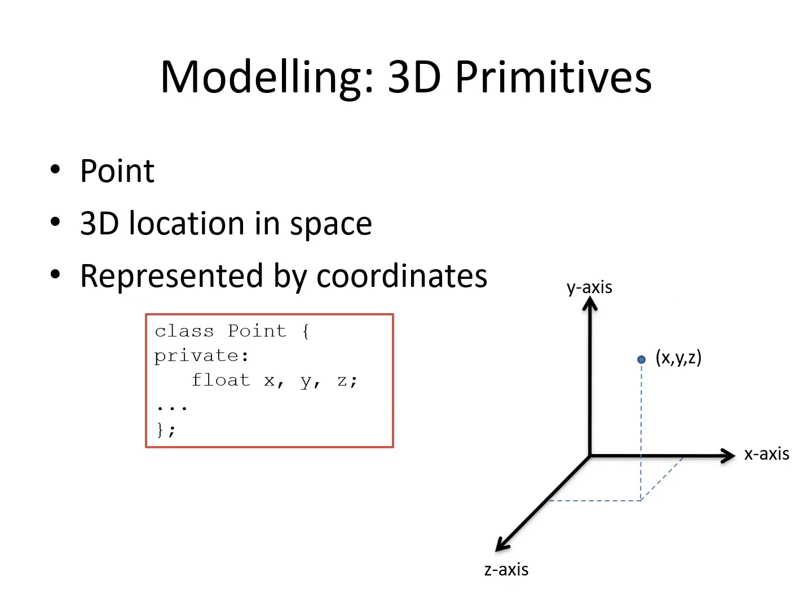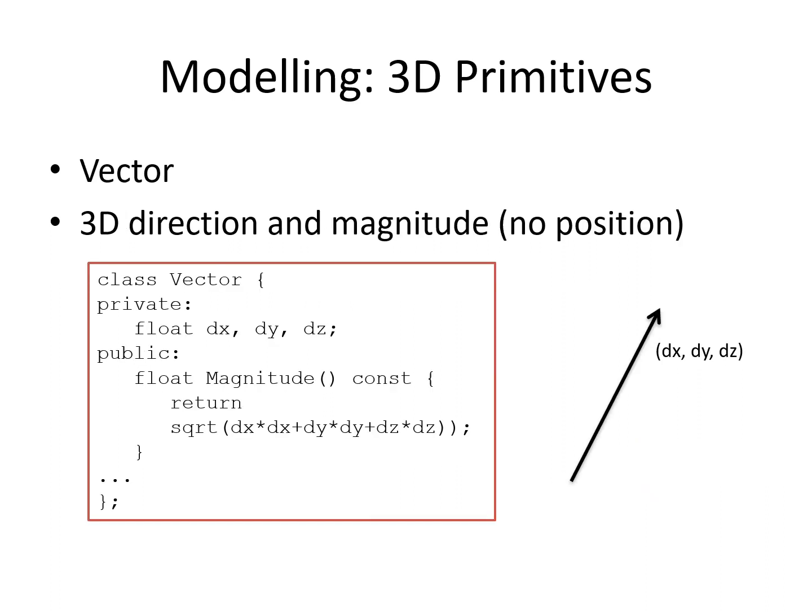We will now look at some basic classes in C++ to facilitate object storage. The fundamental primitive is a 3D point. We can use three floats to represent a point within a class. We can also declare a vector class. A vector has direction but no location. The direction can be stored as three floats. An example member could be the function that returns the magnitude of the vector.